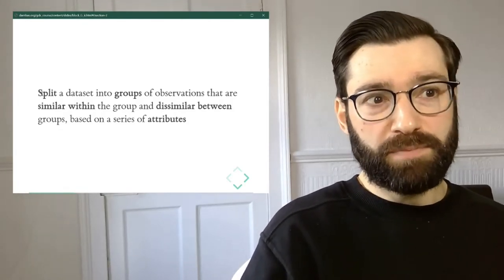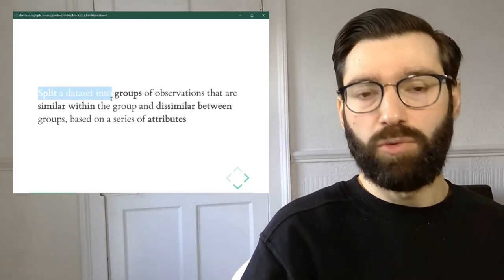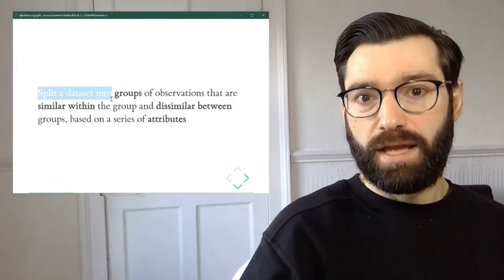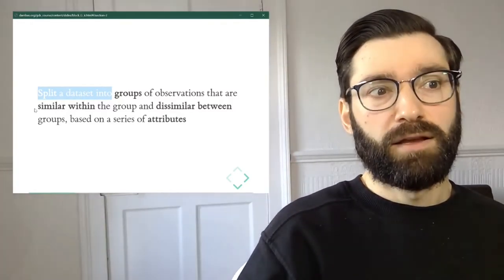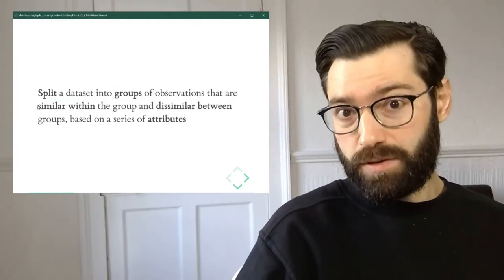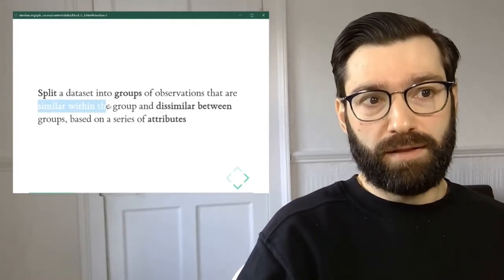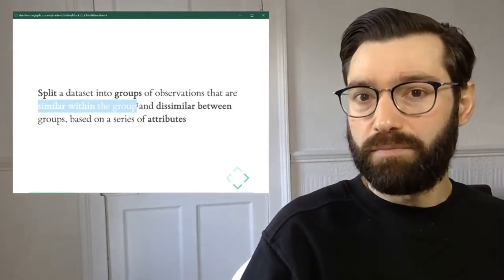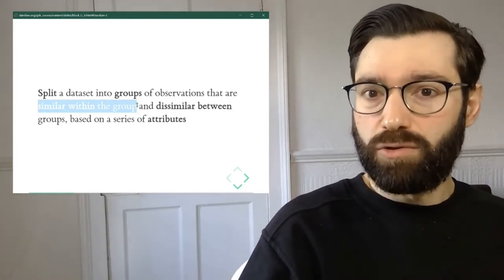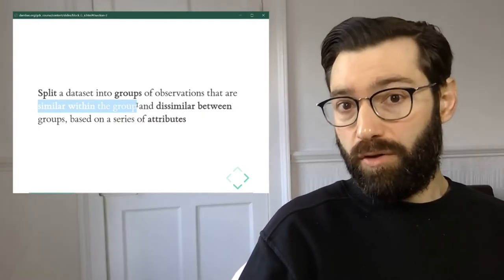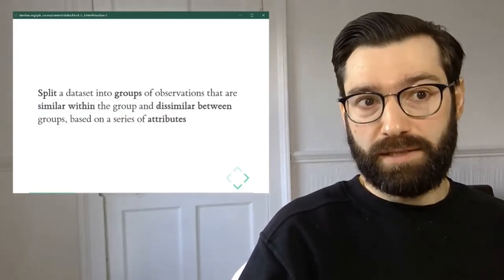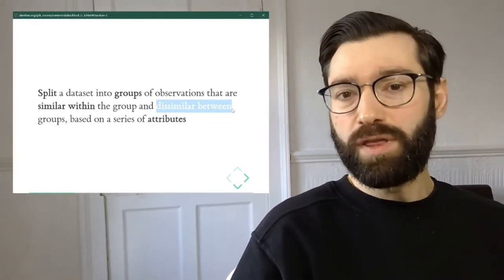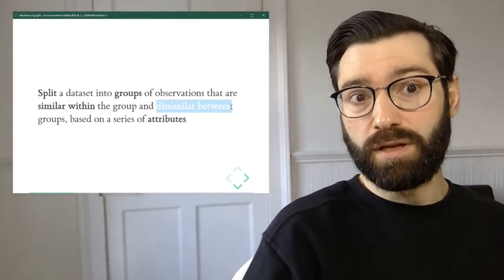We're going to segment our table into groups of rows in a way that rows or neighborhoods, in our example, within the group are going to be more similar to each other than to other neighborhoods in other clusters. In other words, they will be similar within the group and dissimilar between the group.